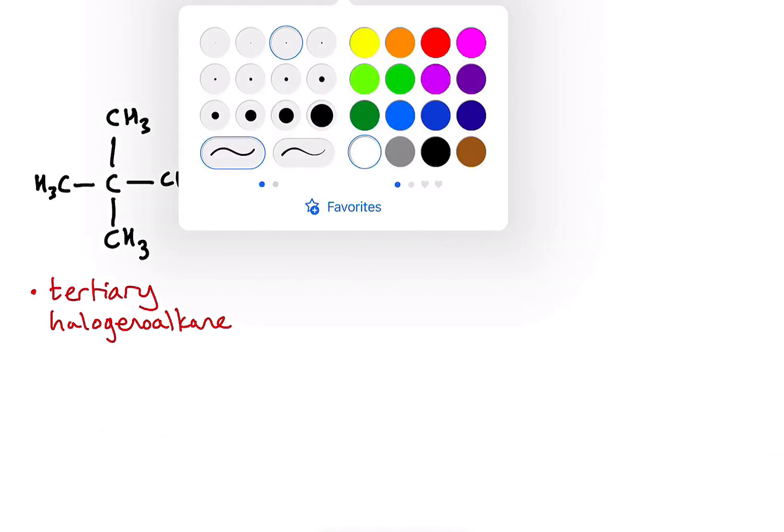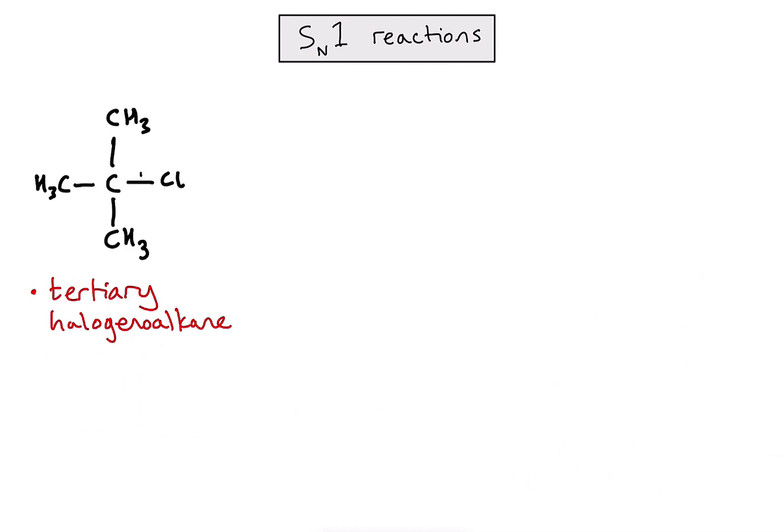To represent this bond breaking — specifically the carbon-chlorine bond in this example — you'll notice that my arrow points from the bond with a two-headed arrow to the chlorine, meaning both electrons in that bond are being taken by the chlorine. Chlorine is considerably more electronegative than carbon, so it pulls more strongly on those valence electrons. This bond breaks in what we call a heterolytic manner — we call this process heterolytic fission.